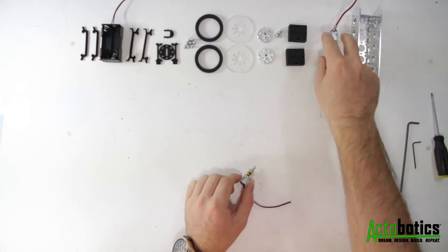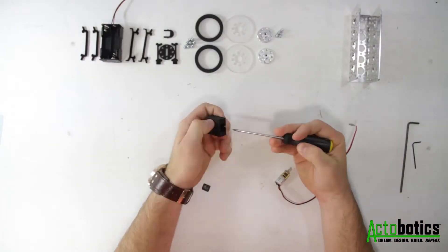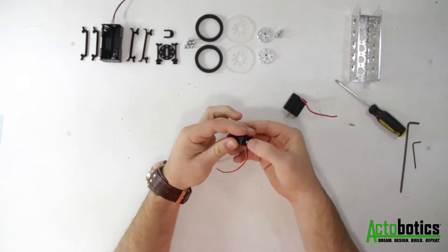The first step is to take the two micro gear motors along with the micro gear motor enclosures. You'll want to remove the back plate and then insert the motor into the enclosure.